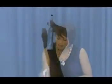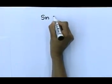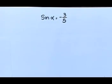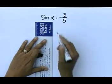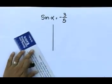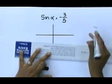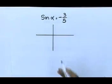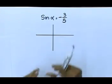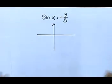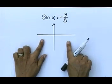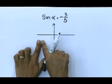I'm going to start with a sketch. The sin of alpha is negative three over five. Draw your y-axis and your x-axis. Because sin is negative, that tells us we must work in which quadrants? Sin is negative in the third or in the fourth quadrant, so you have to sketch either there or there.